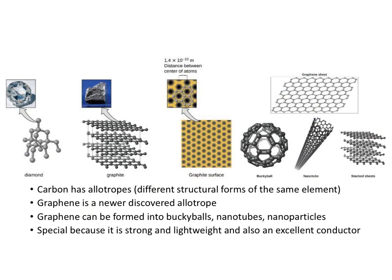Before moving on to lattice structures, it's worth clarifying something interesting about carbon. Graphite is composed of carbon — it's what makes up the lead in pencils — but carbon also forms diamond. Even more drastically different versions of carbon exist, which we call buckyballs, nanotubes, and sheets made out of graphene. All of these are allotropes: they're all made up of pure carbon but have different structural forms.